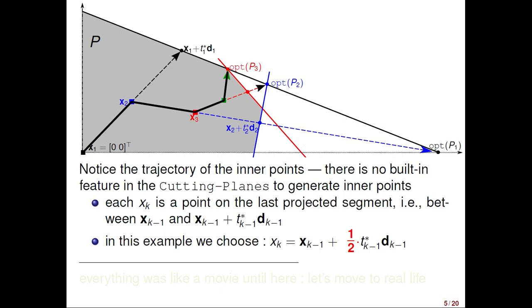In a maximization problem, the inner solutions provide lower bounds, while the outer solutions, OPT-P1, OPT-P2, OPT-P3, provide upper bounds, like in a standard cutting planes. So, everything was a bit like in a movie until here. I wanted to show the general idea. And now, let's move to the real life. So, one of the main difficulties is to solve these projection subproblems.